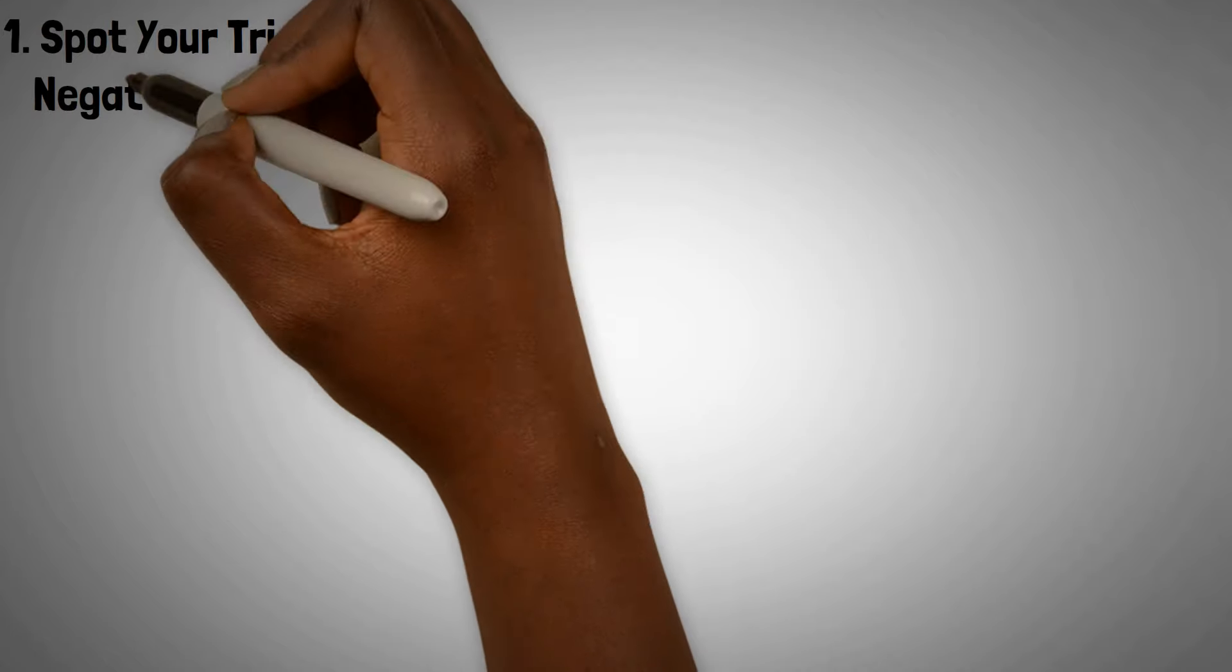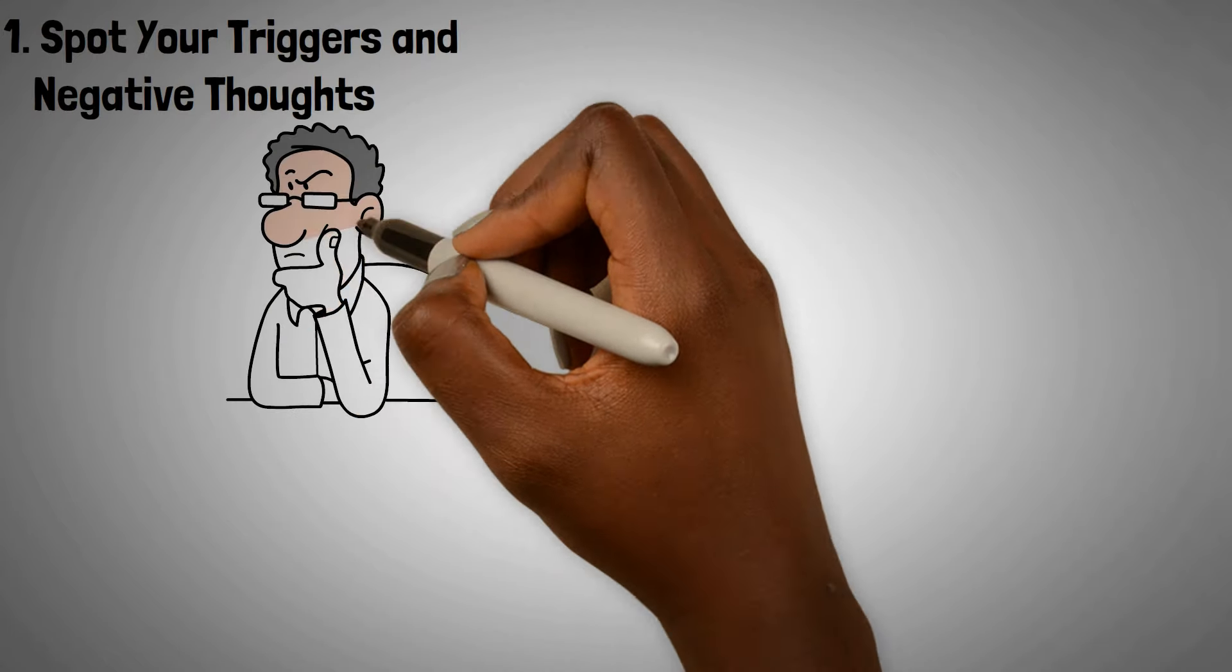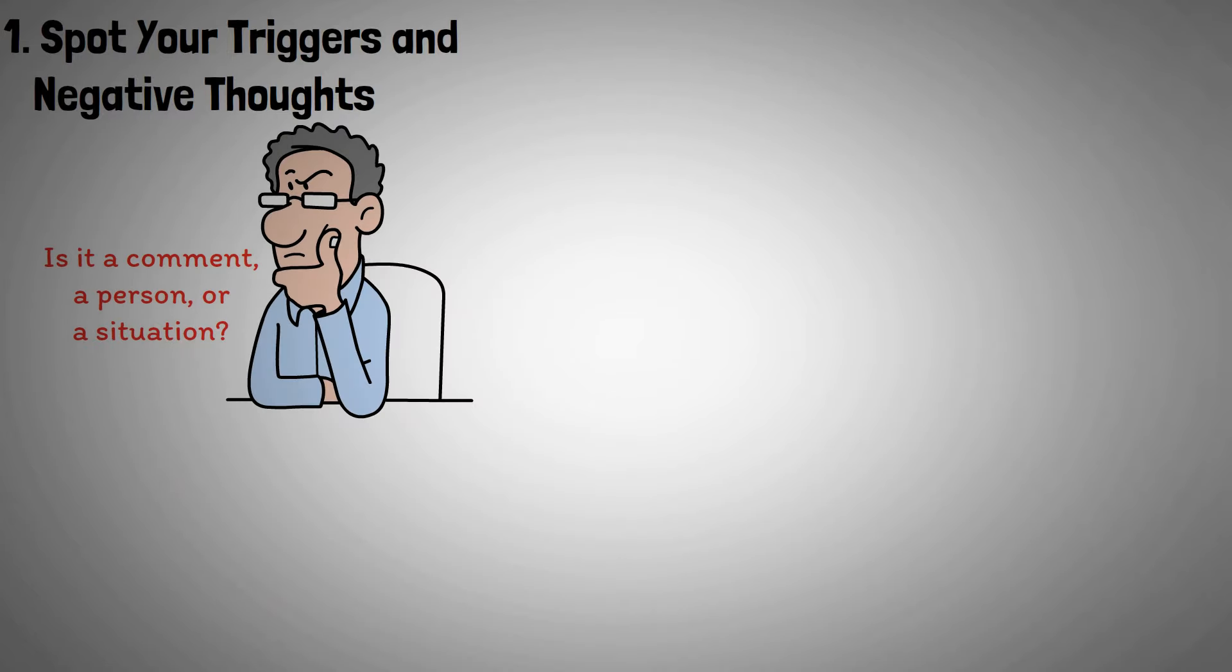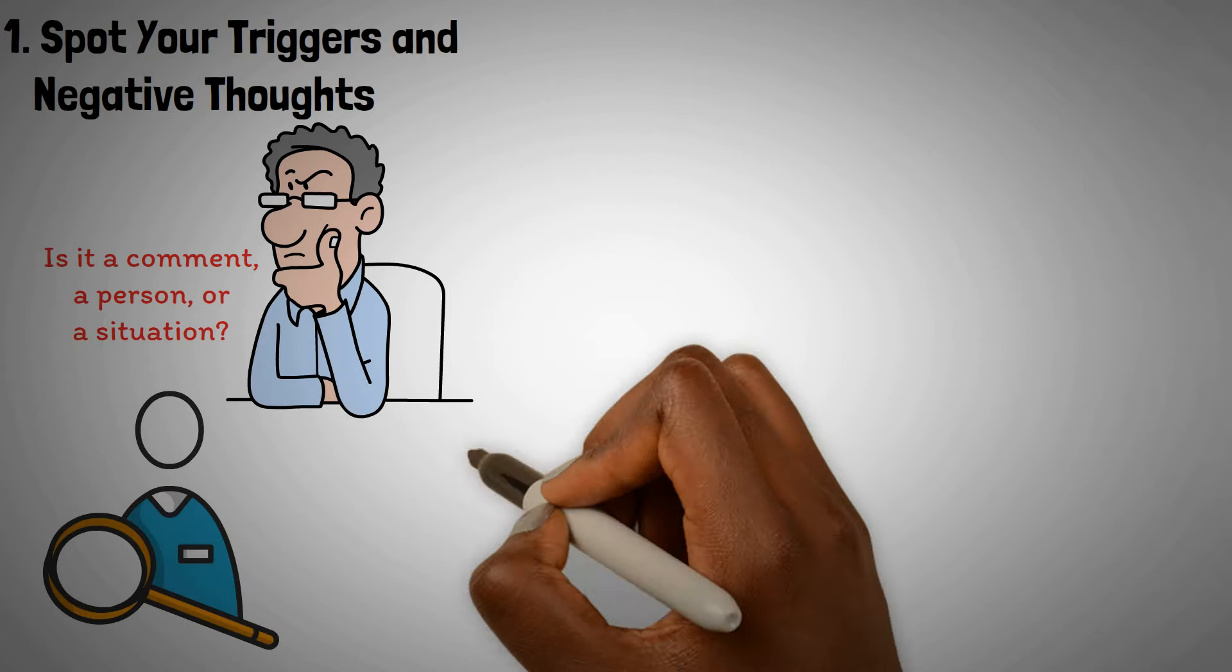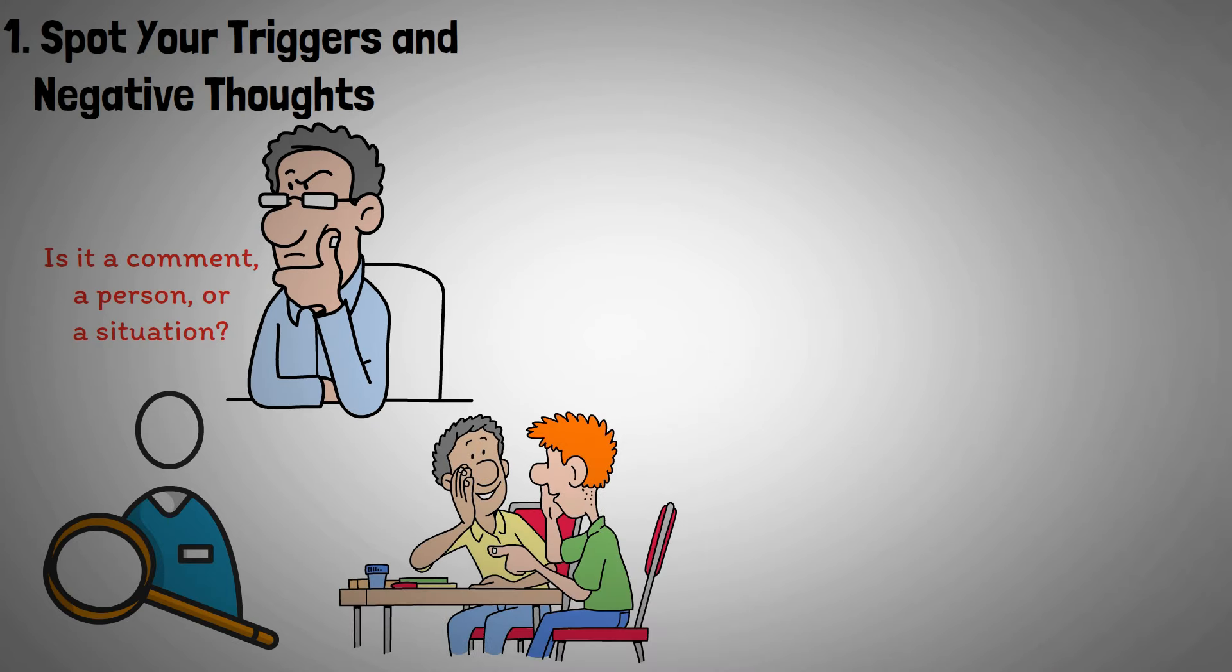1. Spot your triggers and negative thoughts. Notice what sets off your overthinking. Is it a comment, a person, or a situation? Recognize patterns in your thinking that drag you down. Maybe you take things too personally, or worry about stuff that hasn't even happened.